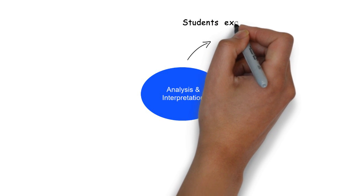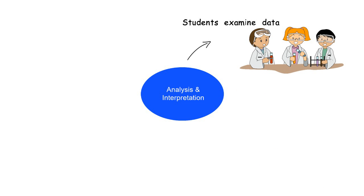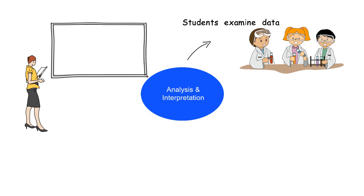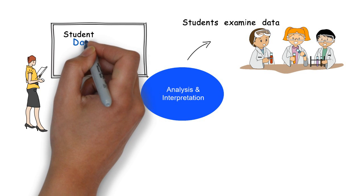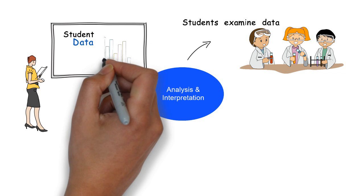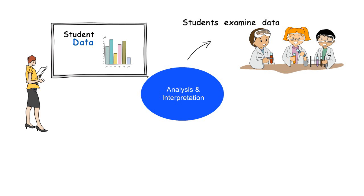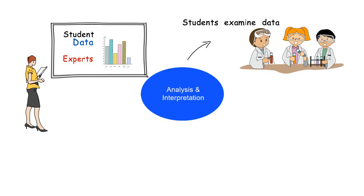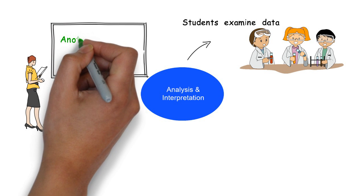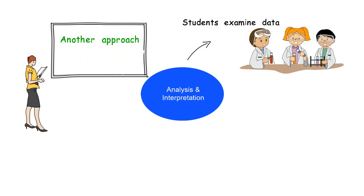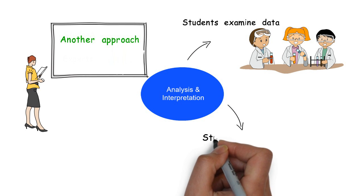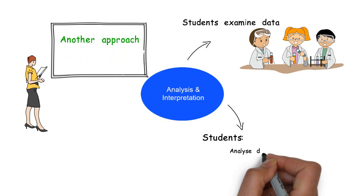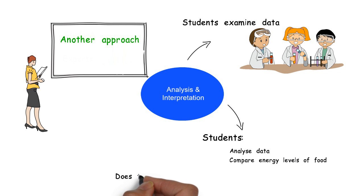The students can then examine their data to see if it supports their hypothesis. A teacher can help with this process by organizing all the collated data and perhaps help the students interpret the data. They could also introduce solutions found by experts and compare them with the student solutions, or they could highlight different approaches to the research to show whether or not sports drinks work. The students will analyze their data and compare energy levels from different foods. They can then decide to what extent their data supports their hypothesis.